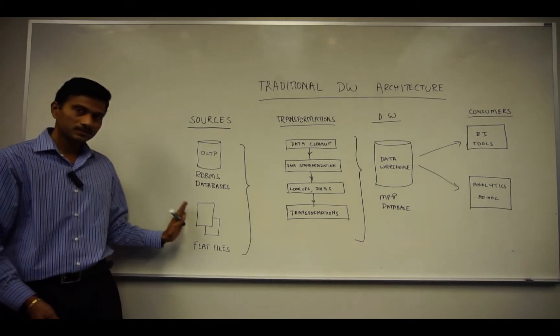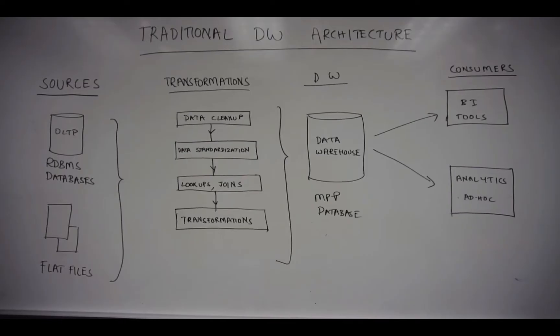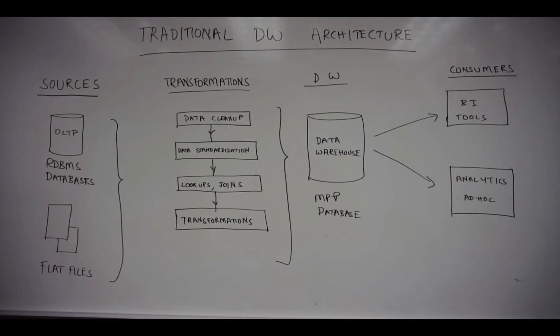The data from these systems then is moved to an ETL server that does transformations. Transformations include data cleanup, like removing bad data, data standardization like doing date standardizations, lookups to reference tables, joins, as well as other transformations to produce facts and dimensions that can then get loaded to a data warehouse.